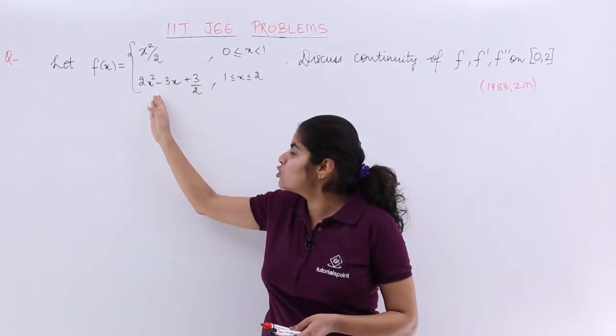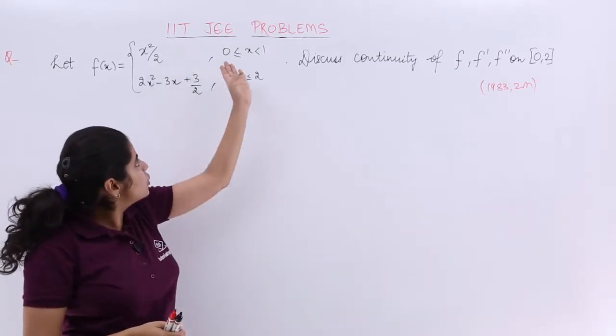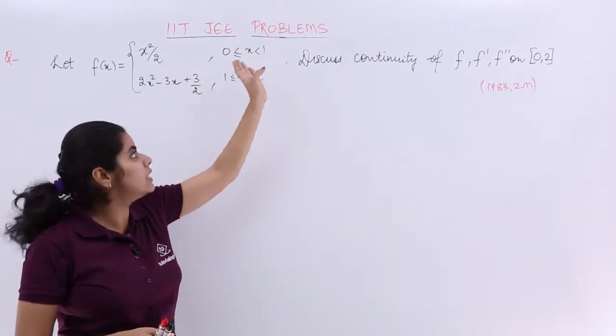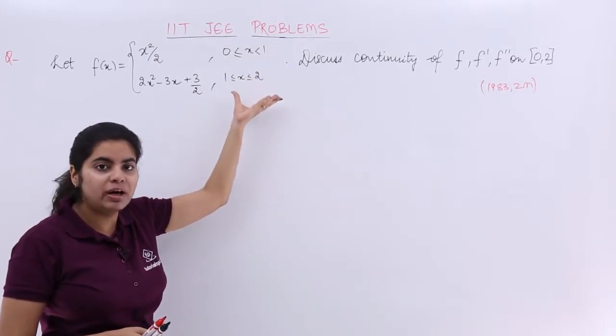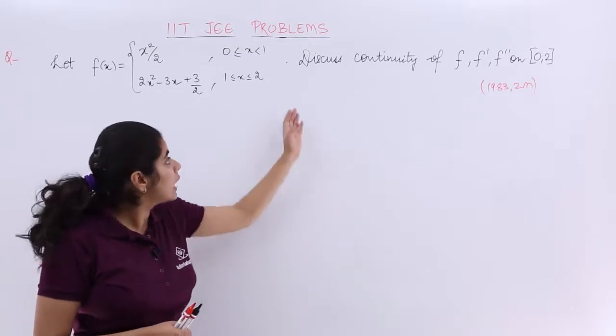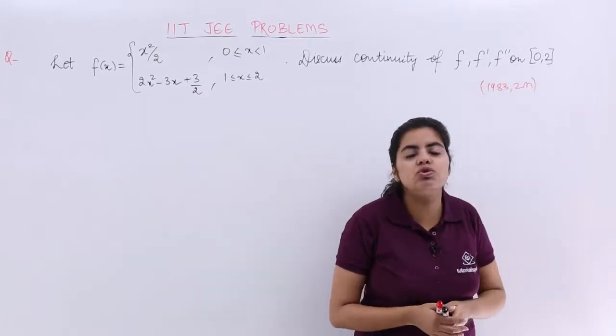Let f(x) equals x²/2 for x in [0,1) and equals 2x² - 3x + 3/2 for x in [1,2]. Discuss the continuity of f, f', and f'' on [0,2].